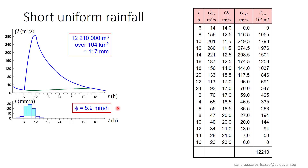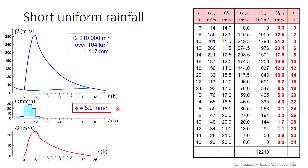Knowing this volume, we can find the index phi in the associated hyetograph to separate the part of the rain that does not contribute to runoff and obtain the net rain. In the present case, we have an index phi of 5.2 millimeters per hour. Then, as the unit hydrograph corresponds by definition to a volume of rain equal to 10 millimeters, we can obtain the unit hydrograph for the considered catchment by scaling the net hydrograph, which has a volume of 117 millimeters. This means we divide the measured net hydrograph by 11.7 to obtain the unit hydrograph. This hydrograph is illustrated here in red, and the time abscissas are finally shifted so that the hydrograph starts at time t equals zero.